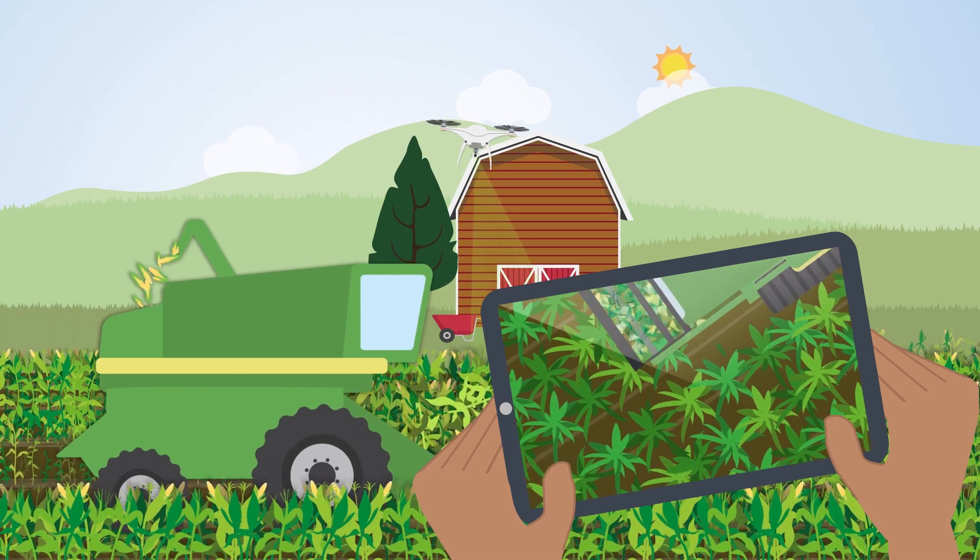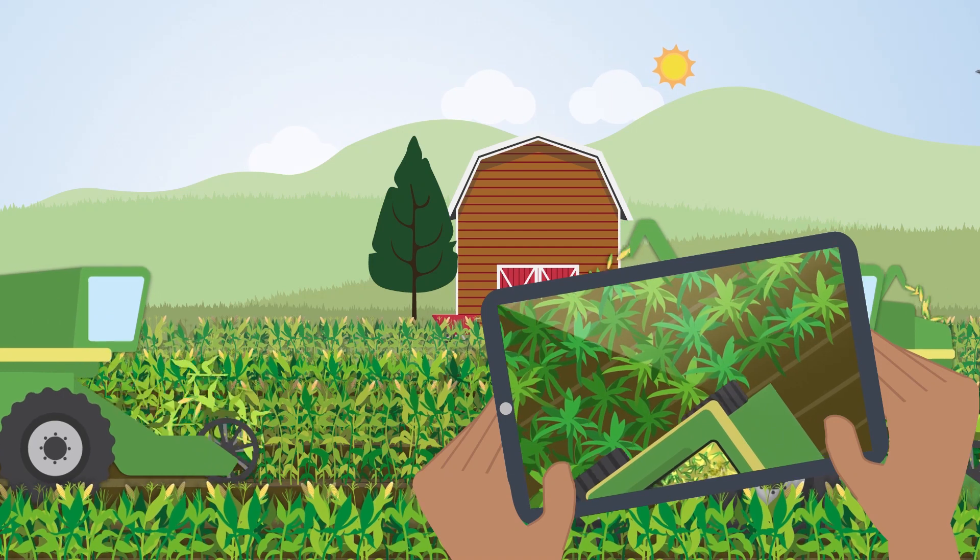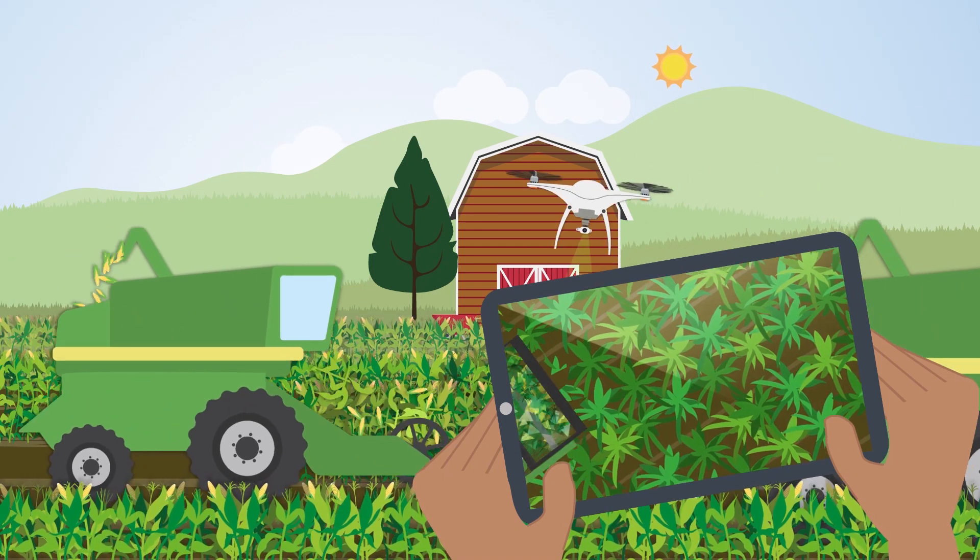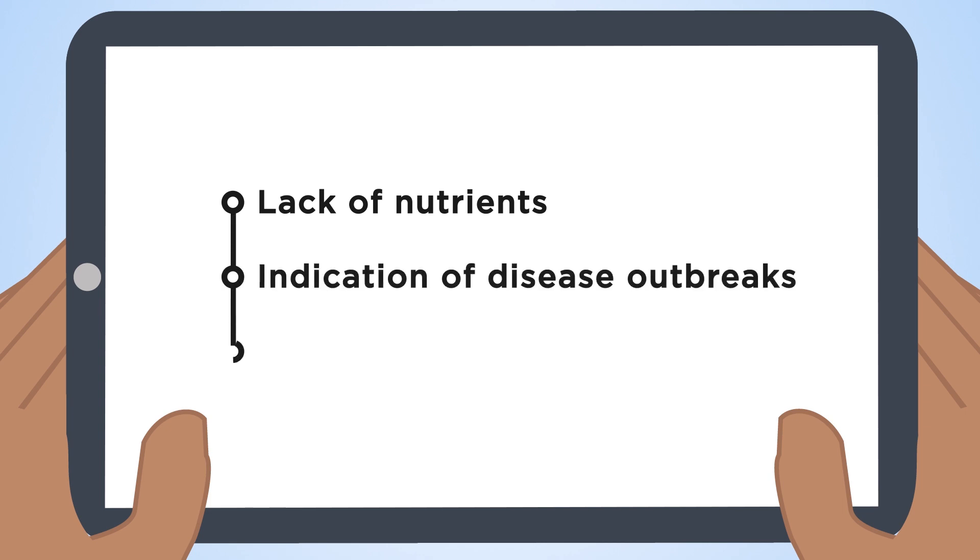Such tasks include fertilizer application, herbicide spraying or crop harvesting. Appropriately presented information informs farmers of any potential issues, such as a lack of nutrients in certain areas of their land assets, or the early indication of a disease outbreak, or provides alerts when the crops are ready to harvest.